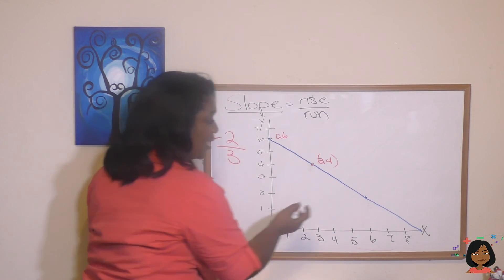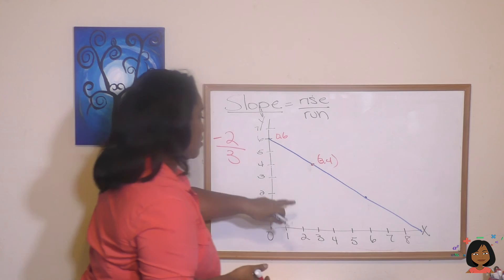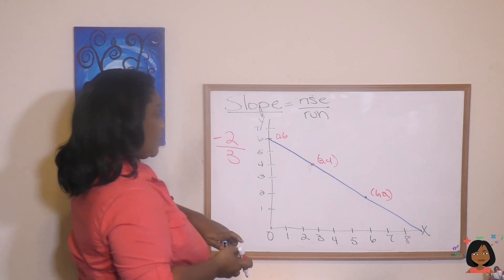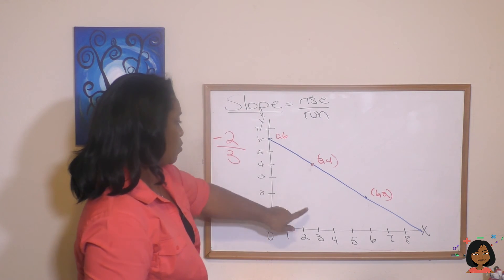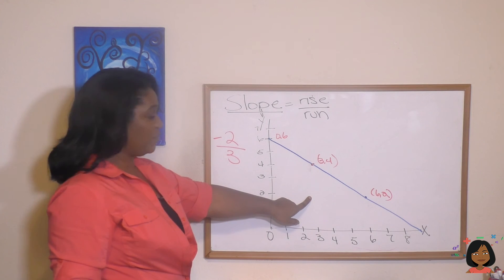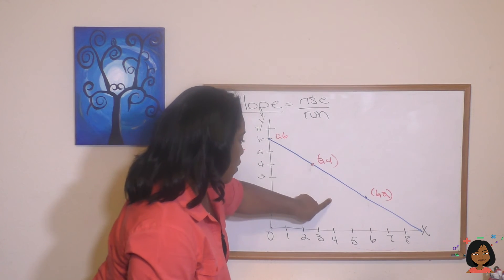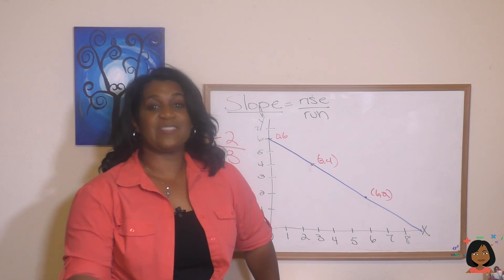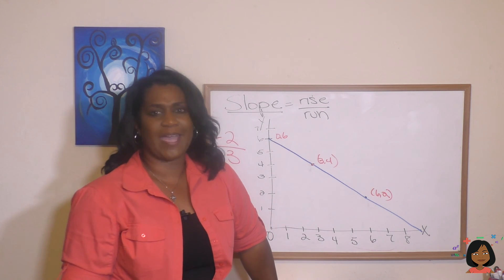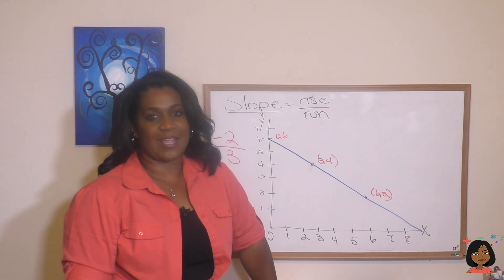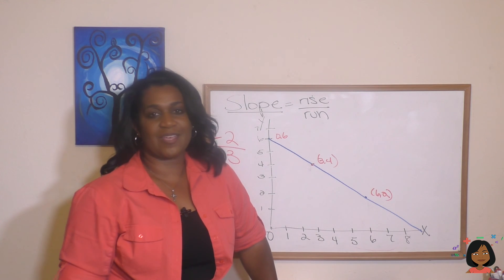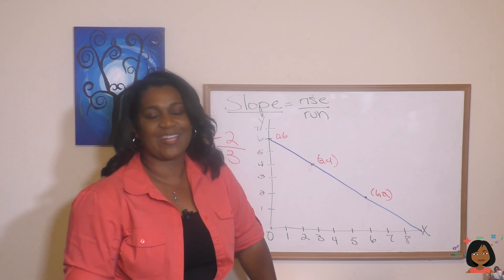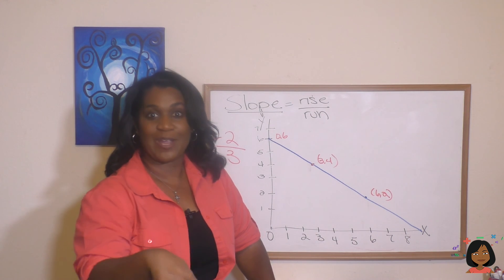We can verify it with another point on the line — this point is (6, 2). From there we go down two — that's our negative two — and over three: one, two, three. You see it's still negative two-thirds. So that's your easy-peasy lesson on slope. You're going to see a lot of slope in algebra, so get used to this. If you can remember rise over run, you are golden. That's it for me today — it's Nicole the Math Lady. See you next time, have a great one, bye!